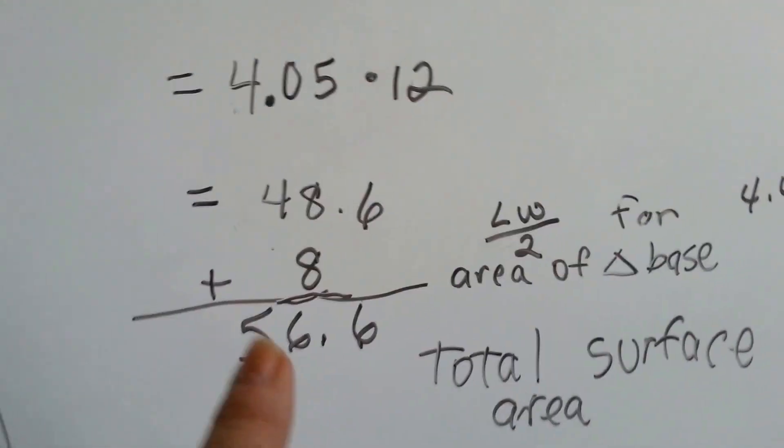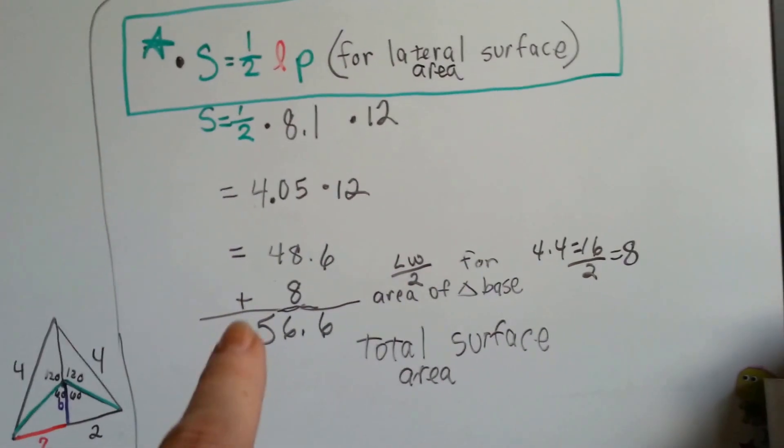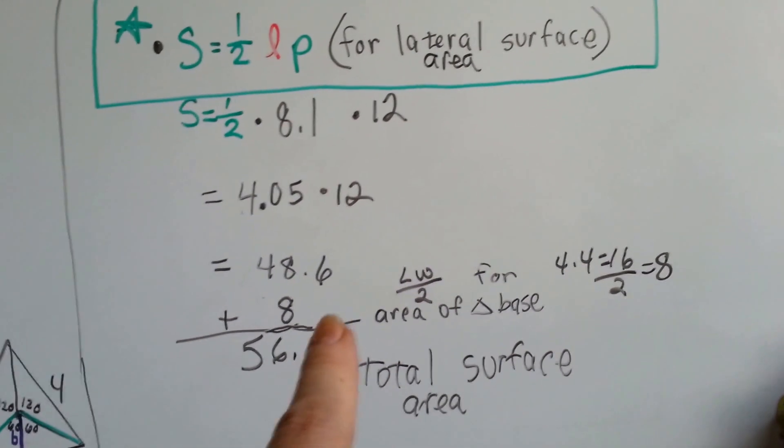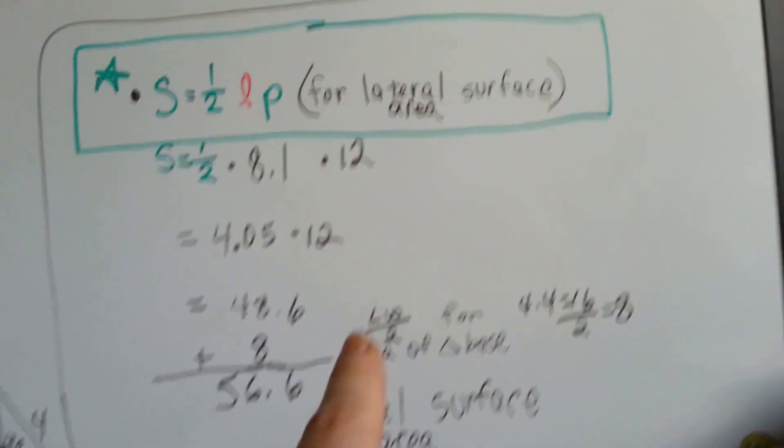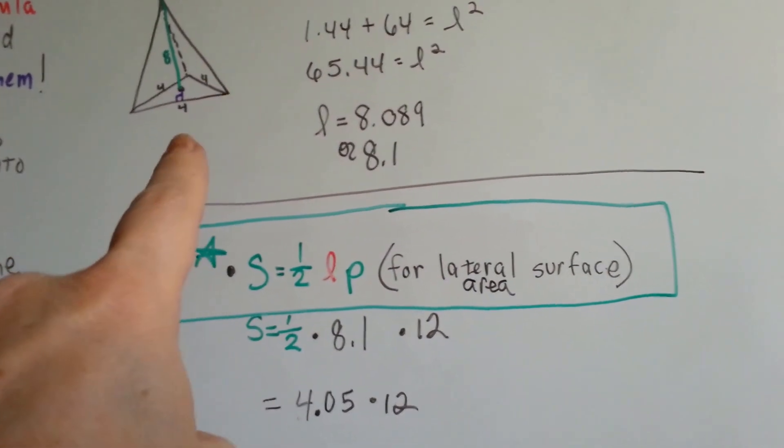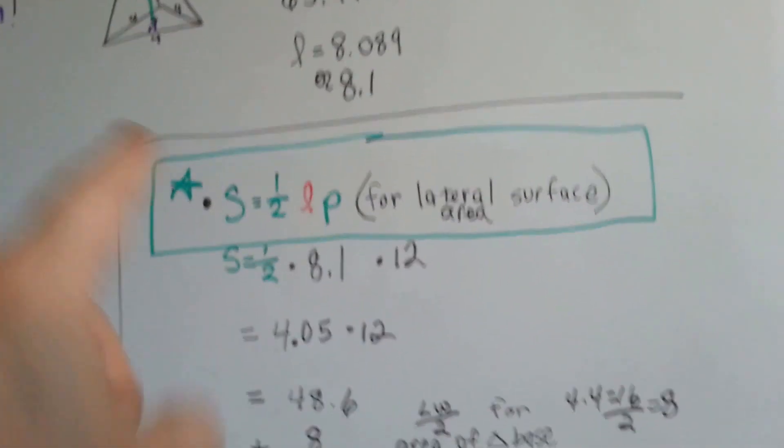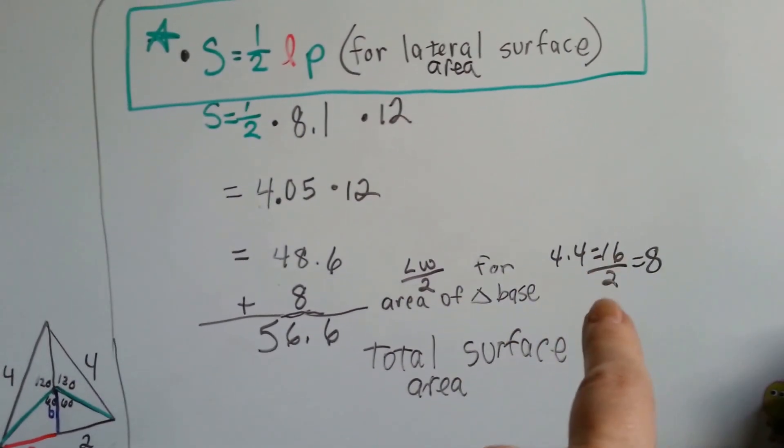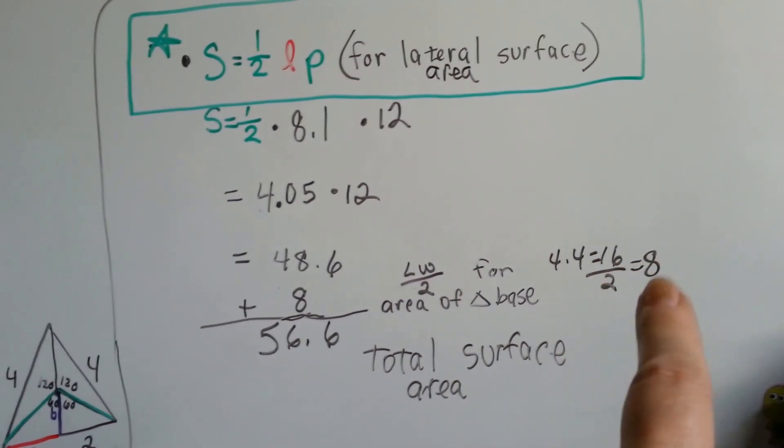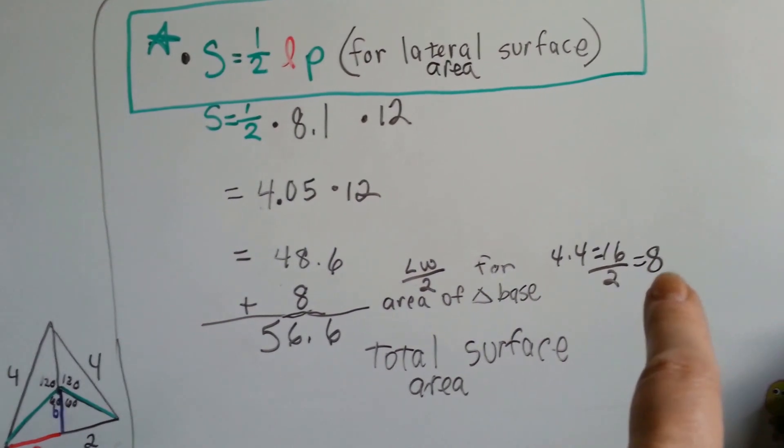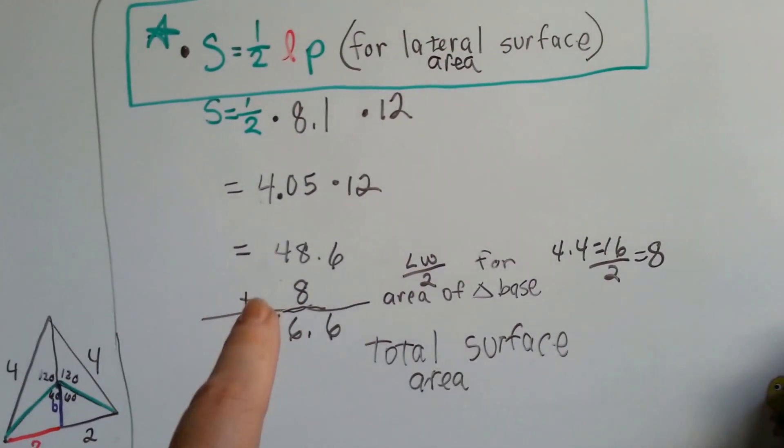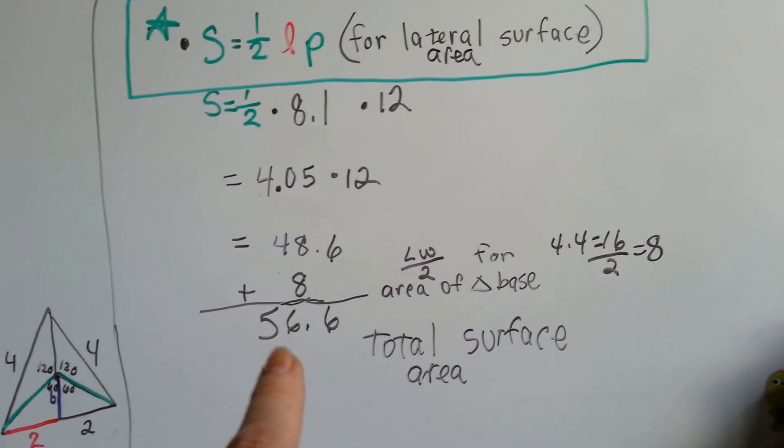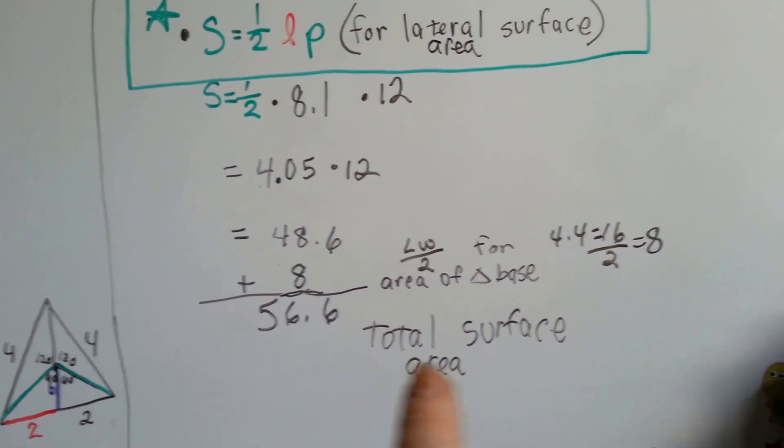Now, what we need to do is we need to add the base. And the base is a triangle. So we can say 4 times 4 is 16 and then cut it in half, the length times the width divided by 2. 4 times 4 equals 16 divided by 2 is 8. So the area of the base is 8. We add that to the 48.6 and we get 56.6 for our total surface area.